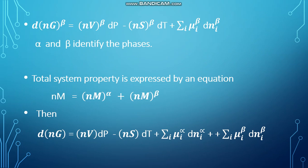Then we can write the above equations by combining as d(nG) = (nV) dP - (nS) dT + Σᵢ μᵢ^α dnᵢ^α + Σᵢ μᵢ^β dnᵢ^β.